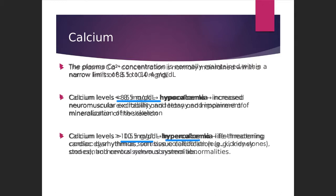Now what happens in hypocalcemia? If a person is suffering with hypocalcemia, it leads to too much excitation of the neuromuscular junction because calcium is responsible for contraction of the muscles. It also leads to impairment in the mineralization of the bones. Apart from this, one more condition known as tetany is seen — tetany is nothing but involuntary contraction of the muscles because of low levels of calcium in the body.